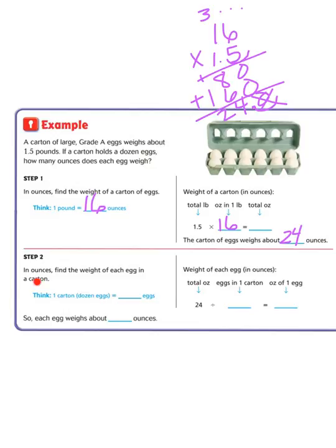So, now let's look at step 2. In ounces, find the weight of each egg in a carton. We have to think, one carton, which equals a dozen eggs, we know that there are 12 in a dozen. So, there are 12 eggs in one carton. So, the weight of each egg in ounces. We begin with our total ounces, which was our 24. The total number of eggs in a carton is 12. So, we're going to divide. And 24 divided by 12 equals 2. So, each egg weighs about 2 ounces.